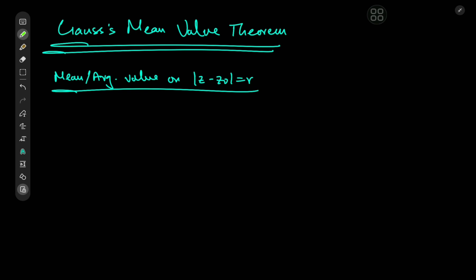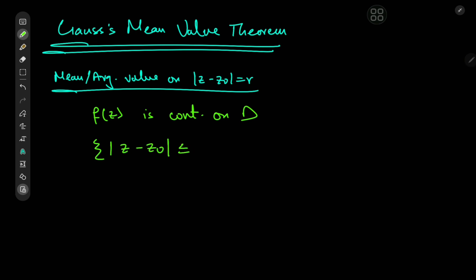But how on earth is the average value of a function defined in the complex realm? Well, we need to consider a function f of z that is continuous on some domain d, and within this domain we need to consider a disk of positive radius. So we're talking about the set of z such that the absolute value of z minus z-naught is less than or equal to rho, being a positive real number.